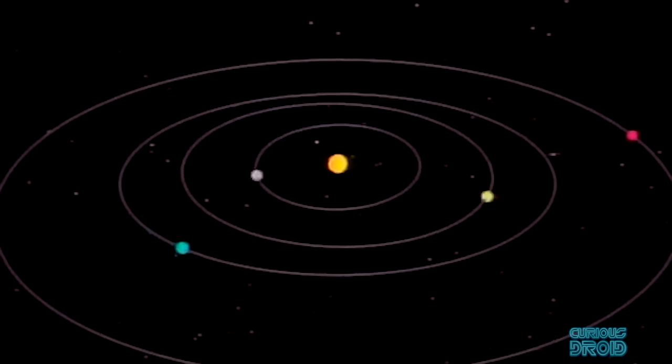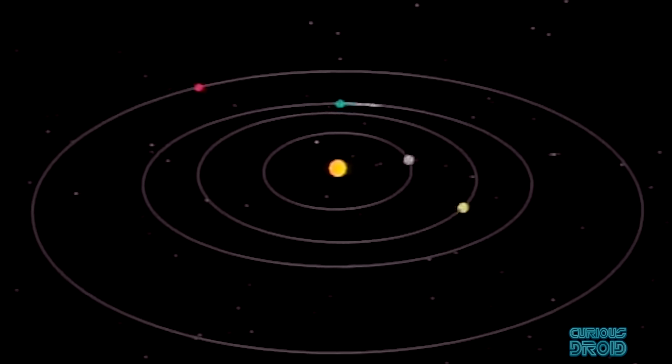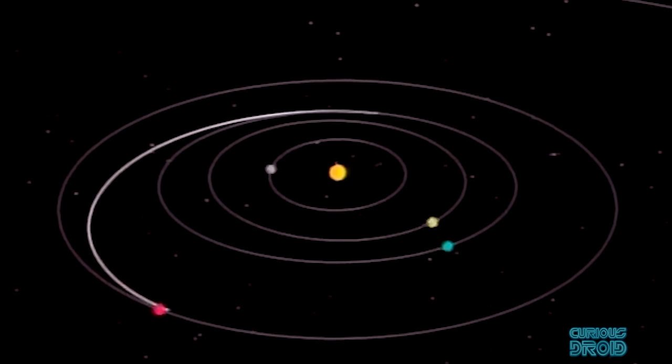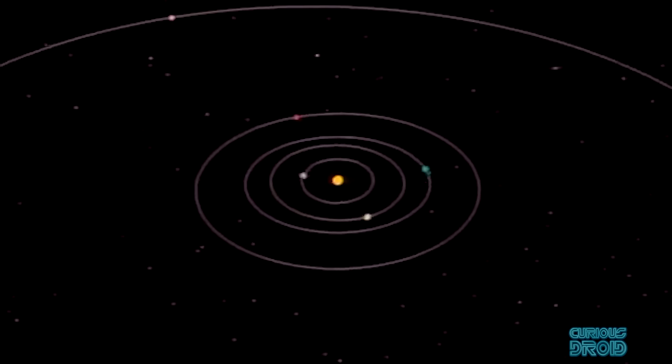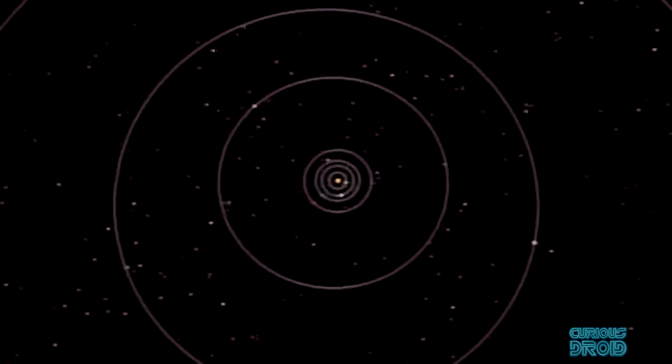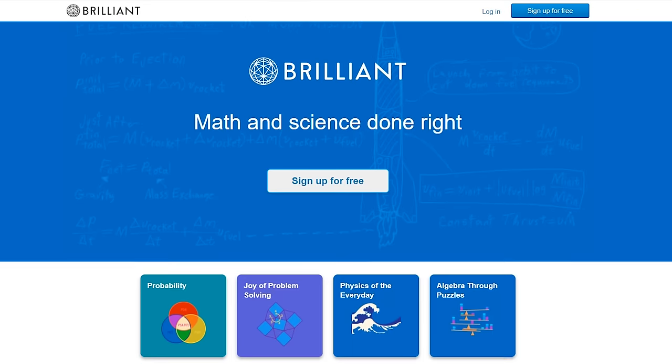The ability to work out the orbits of the planets is a key fundamental in planning any space missions that we will be doing for the foreseeable future, and it's something that you can do yourself with the help of the guys over at brilliant.org.